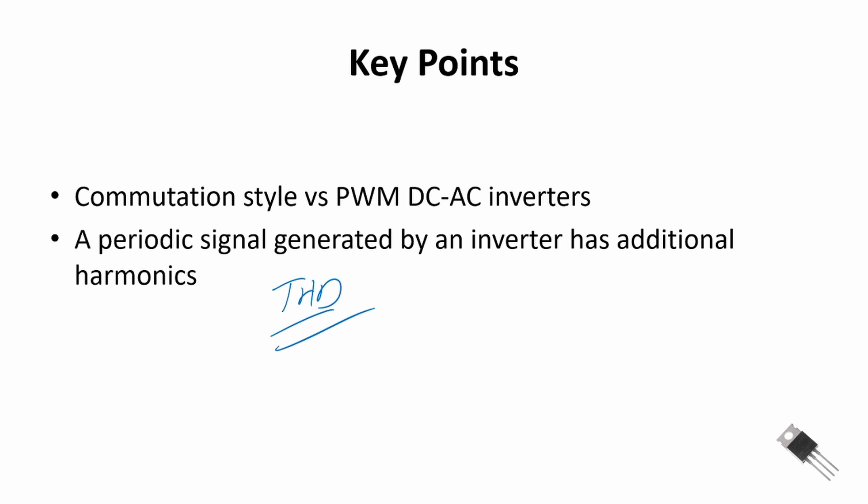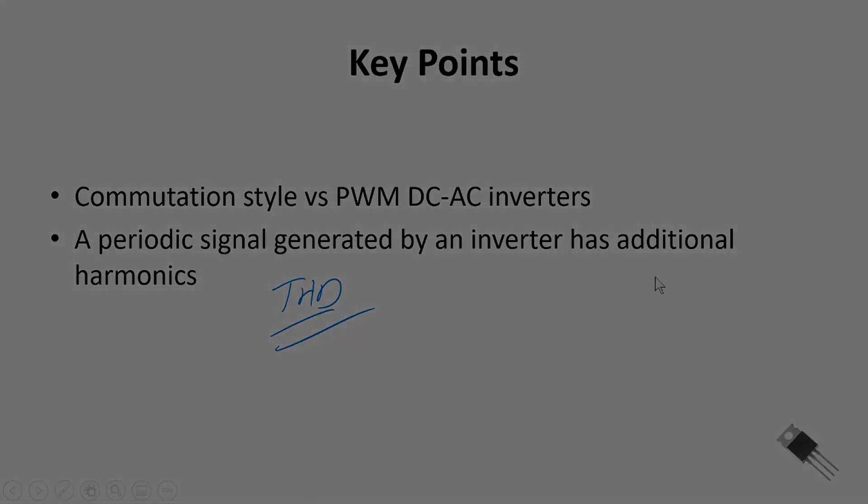The PWM converters typically have lower total harmonic distortions and approach a pure sinusoidal wave. In the next video, we're going to review the Fourier series and show how to compute the total harmonic distortion for the square wave and the modified sine wave type inverters. Thanks for watching.